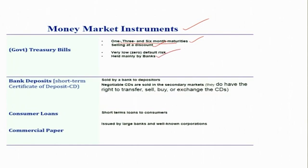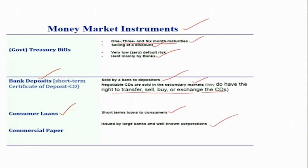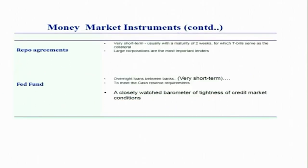Another money market instrument is bank deposits — short-term certificates of deposits sold by banks to depositors. There are also negotiable certificates of deposits, which can be sold in the secondary market. Consumer loans are another kind — short-term loans to consumers. Commercial papers are also short-term instruments issued by large banks and well-known corporations to meet their day-to-day operations and liquidity requirements.